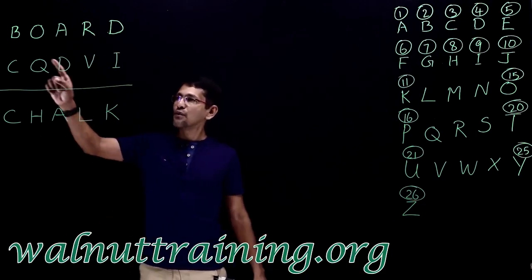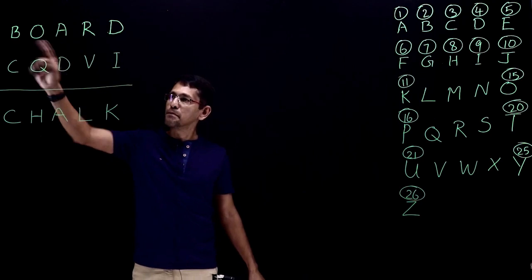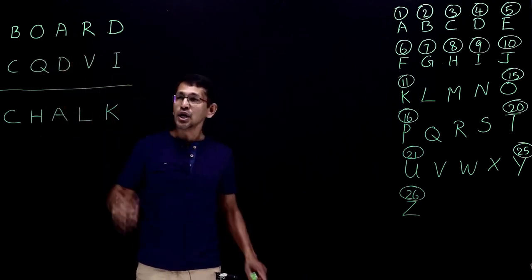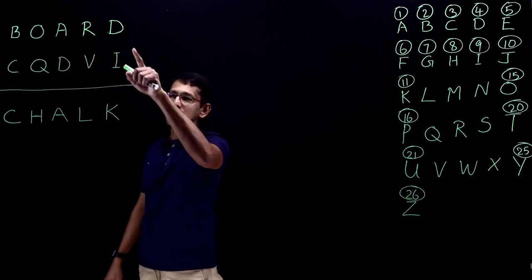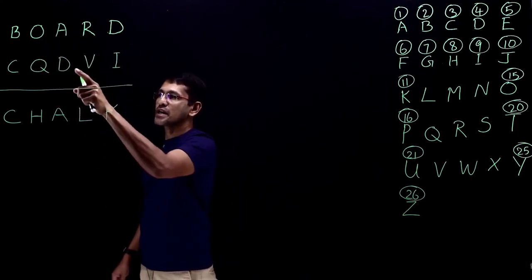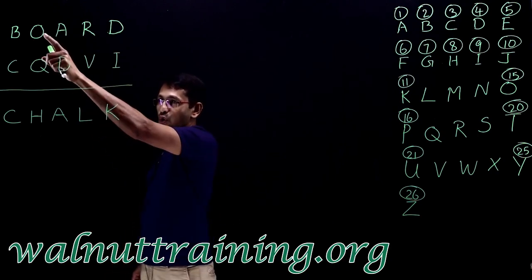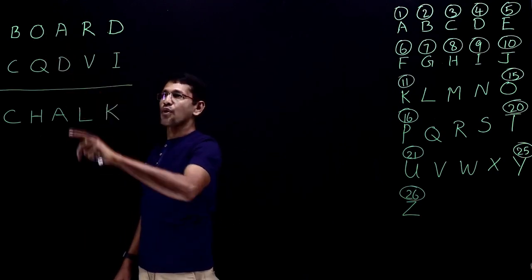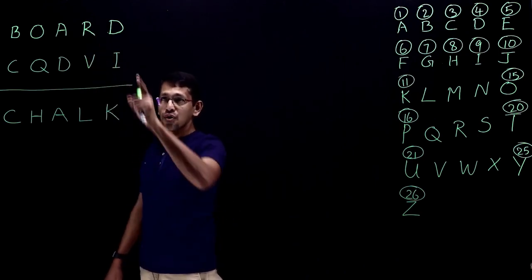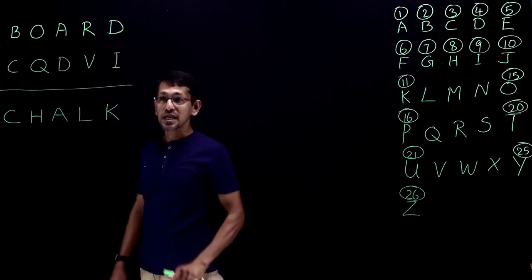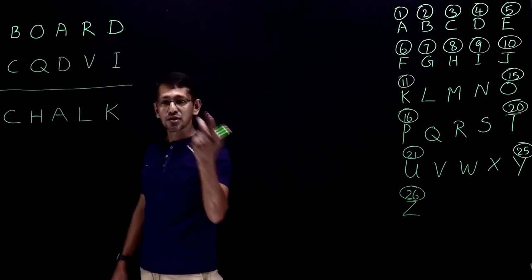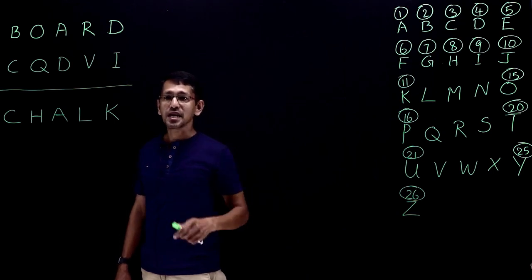The best method to find the answer is to first look at the letters B, O, A, R, D and check if they are repeated in the code CQDVI. Do we have B here? No. Do we have O? No. Do we have A? No. Do we have R? No. Do we have D? Yes, but all the letters are not repeated — just one or two letters.